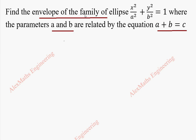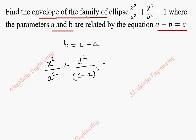From this relation, we can find b as c minus a. By replacing that in the given equation, we get x² / a² + y² / (c - a)² = 1. Now to get the envelope, we have to differentiate the given equation with respect to the parameter and eliminate the parameter. We are going to differentiate this equation with respect to the parameter a.